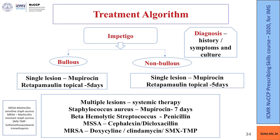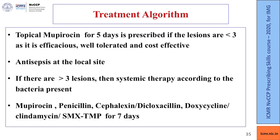For methicillin-resistant Staph aureus, doxycycline, clindamycin, or sulfamethoxazole-trimethoprim can be given. Topical mupirocin for five days is prescribed when lesions are fewer than three, as it is efficacious, well tolerated, and cost-effective. Antiseptic at the local site must also be used. For more than three lesions, systemic therapy is chosen according to the bacteria present — mupirocin, penicillin, cefalexin, or dicloxacillin.